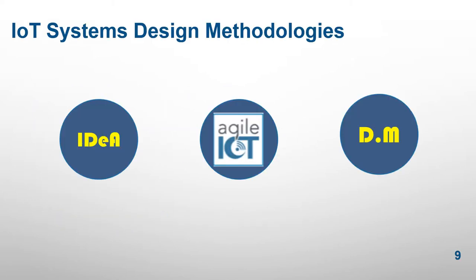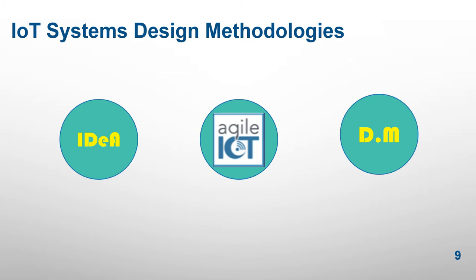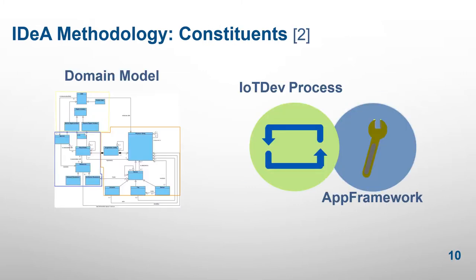In what follows, we present methods that either have been defined for IoT systems engineering or existing ones have been adapted to such type of systems. There are three methodologies: IDEA, Agile IoT, and Design Methodology. IDEA, IoT Dev Process and App Framework, is a model-based system engineering method and one of the few methods specially defined for IoT systems. IDEA considers the model as the primary artifact for system development and is based on well-established standards.